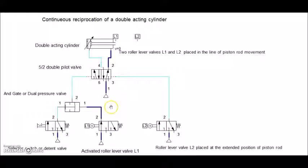All the compressed air signals are shown in dark blue lines. In roller lever valve L1, which is placed directly beneath the piston rod, it is getting pressed in the beginning itself and hence it is activated and the compressed air as a signal comes out of L1 and goes towards the AND gate.